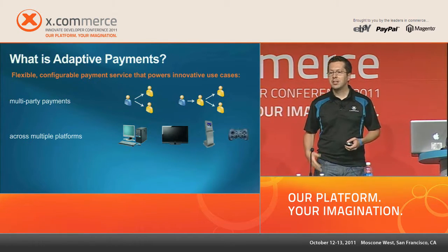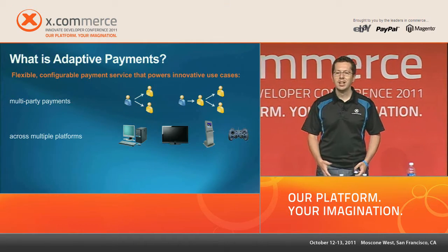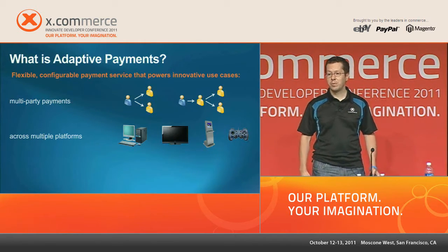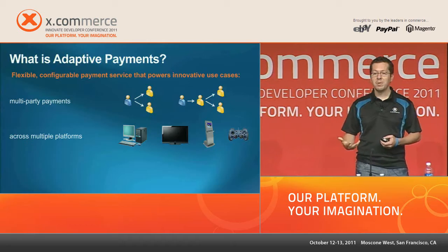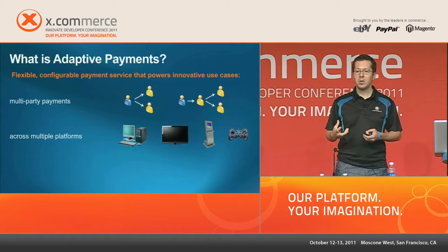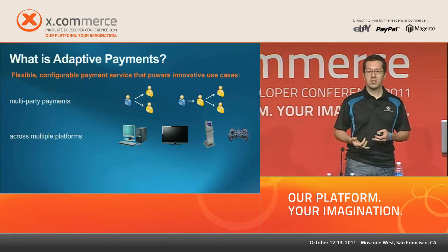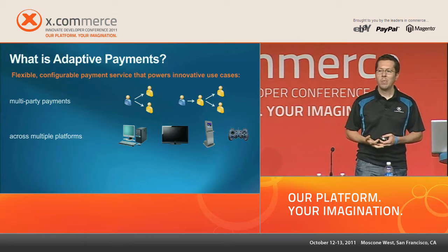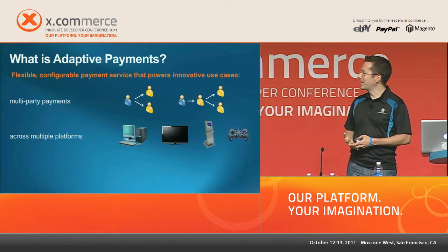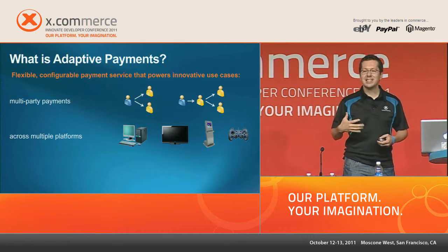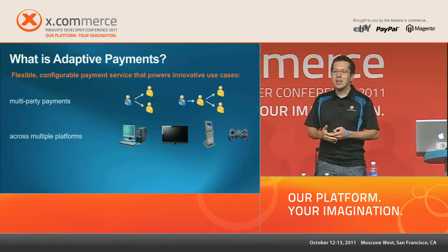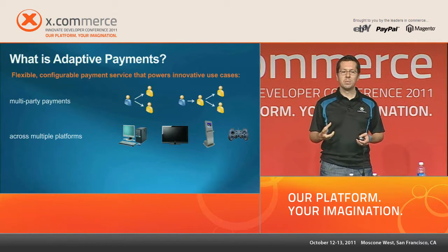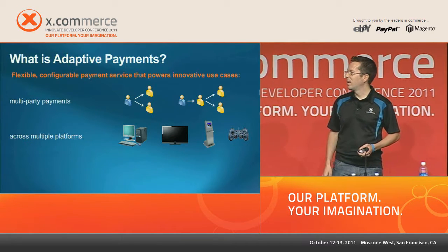A second salient feature is support for different hardware and software platforms. The internet isn't just about the PC anymore, and neither is payments. With Adaptive Payments, we built AP to enable payments not just on PCs but also on televisions, kiosks, and game consoles. Let's say paying in your car — there are a million different ideas about where to enable payments, and Adaptive Payments was built to support that kind of use case.